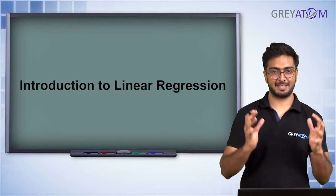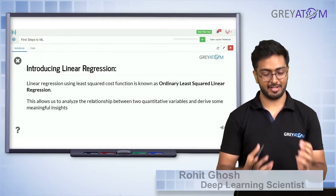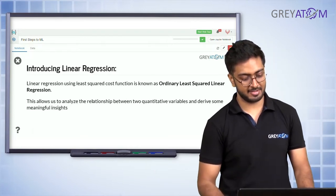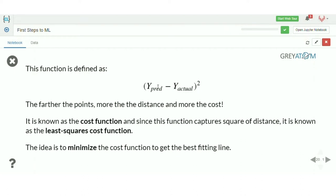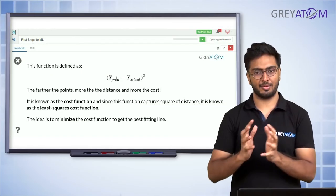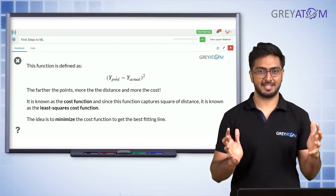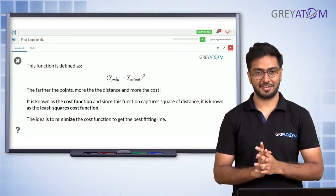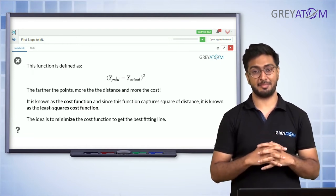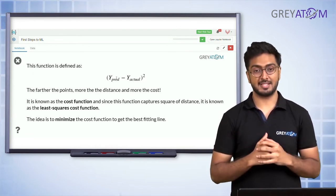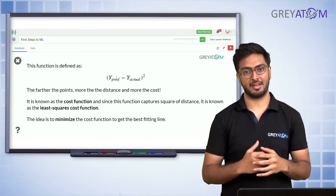This is a basic building block of linear regression. We have already talked about linear regression using a least squared cost function. Before we go ahead, let's take a moment to appreciate what we have learned here, which is a very important and fundamental concept in machine learning: the cost function. The cost function basically measures how bad your predictions are.